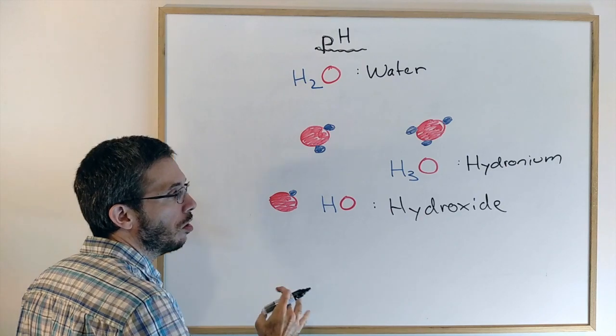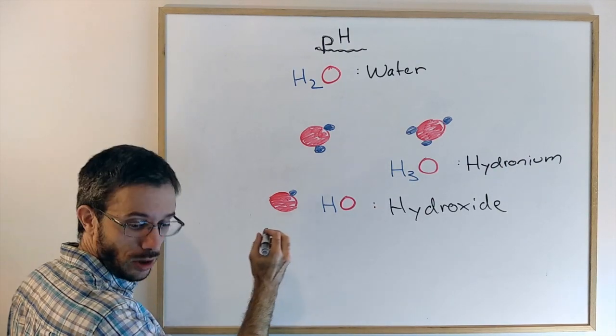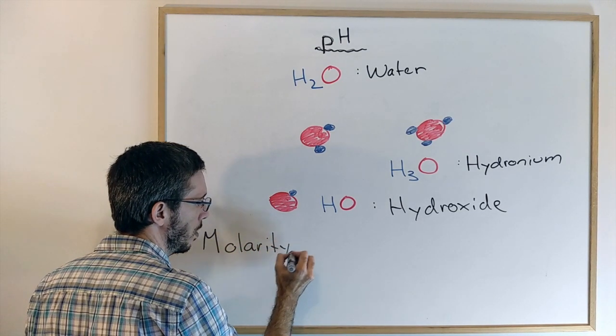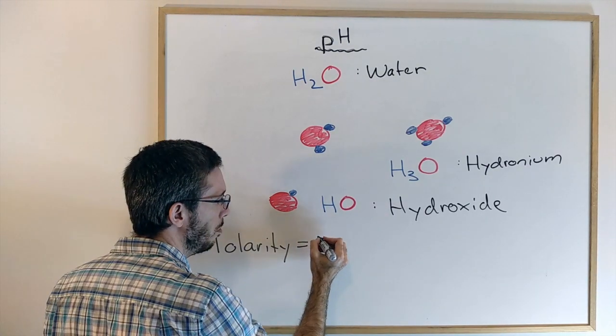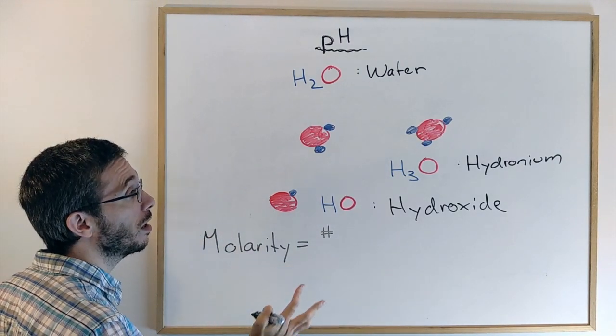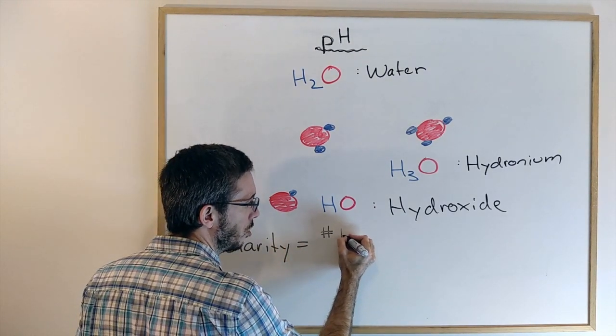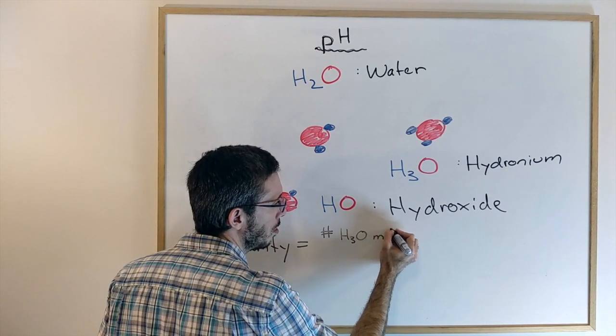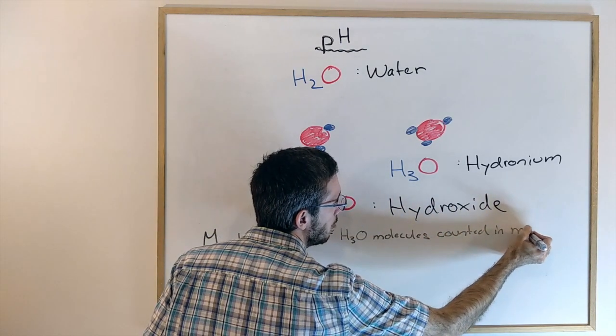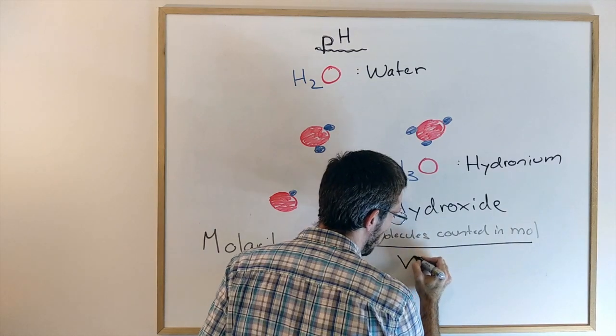Now, the concentration of how much hydronium or how much hydroxide there is inside a solution is usually measured by molarity. If we want to calculate the hydronium molarity, which is going to be the important one for the pH, that would mean the number of H3O molecules counted in mol divided by the volume in liters.